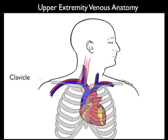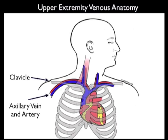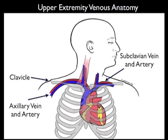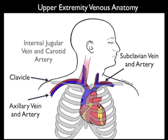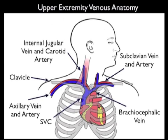Let's review the relevant upper extremity venous anatomy needed for successful cannulation of the axillary vein. Here we see the axillary vein and axillary artery lateral on the patient's chest wall. Notice the clavicle and the first rib — as these structures move medially past the first rib, they become the subclavian vein and artery. We can also see the internal jugular vein and carotid artery moving down the neck, converging with the subclavian vessels into the brachiocephalic vein, which continues toward the heart to become the superior vena cava. Optimally, the catheter tip should be placed in the superior vena cava, not into the right atrium.